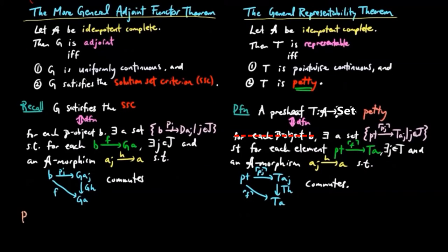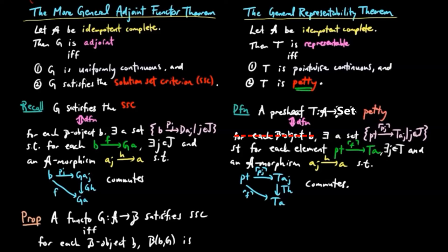Then from this reverse engineering, we have a functor G satisfies the solution set criterion if and only if for each B object B, the pre-sheave B, B, G is a petty pre-sheave. And the proof is that we just put B, B, G in for the pre-sheave T in the definition of petty above. And that completes the proof.